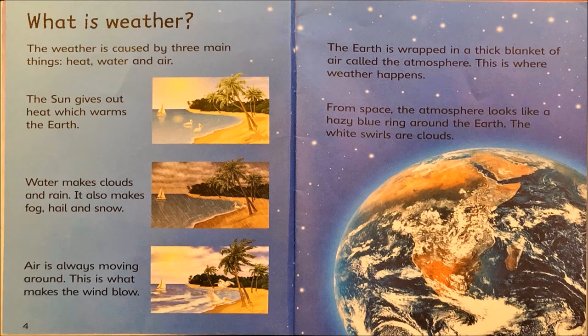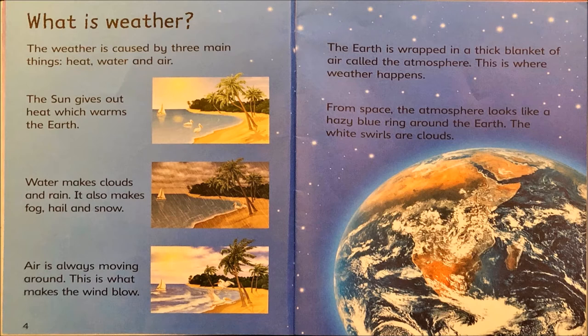What is weather? The weather is caused by three main things: heat, water, and air. The sun gives out heat, which warms the earth. Water makes clouds and rain. It also makes fog, hail, and snow. Air is always moving around — this is what makes the wind blow. The earth is wrapped in a thick blanket of air called the atmosphere. This is where weather happens. From space, the atmosphere looks like a hazy blue ring around the earth. The white swirls are clouds. If you look at the picture, you can see that hazy blue ring that is the atmosphere.